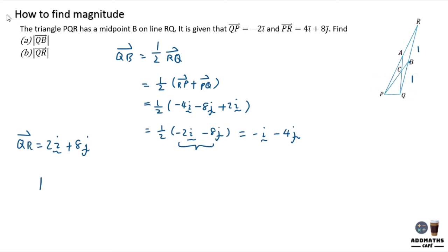To find the magnitude of QR, apply the distance formula where you take the value of i, which is 2, square it, plus the value of j, which is 8, square it. Using a calculator, it will be 4 plus 64, which gives square root 68. This will be your units. This is the magnitude.